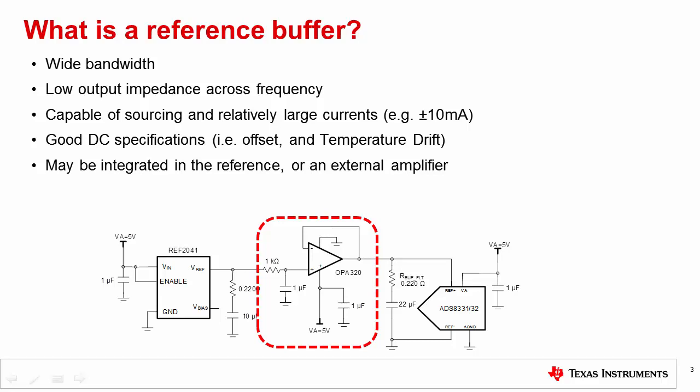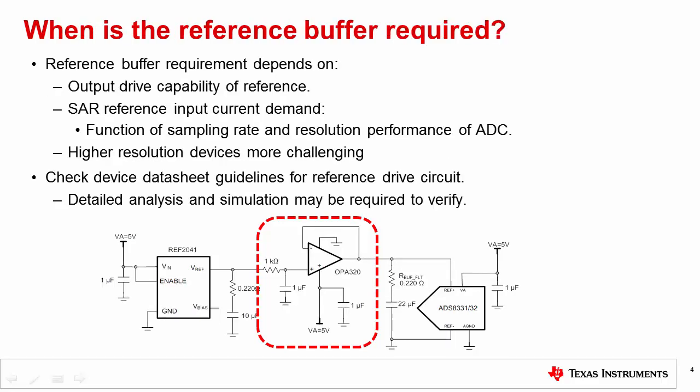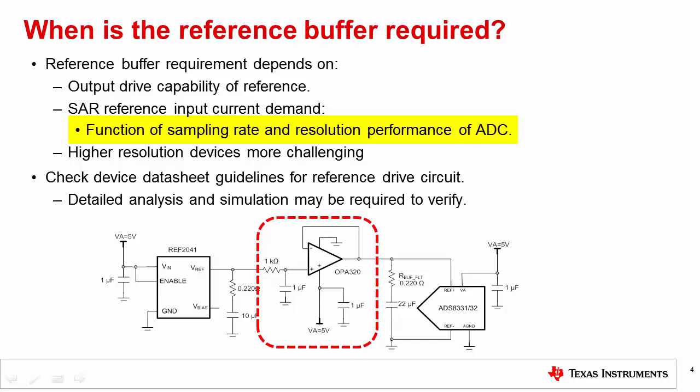The figure below shows a reference buffered with an external wide bandwidth amplifier. When is a reference buffer required? The buffer requirement depends primarily on two factors: the output drive capability of the reference, and the SAR ADC input current demand. The SAR ref input current demand tends to be a function of the sampling rate and resolution of the ADC. It is important to understand that the reference input current in the traditional SAR ADC is not a static or constant DC current — rather, it consists of fast current transients as the binary weighted bit decisions are made.